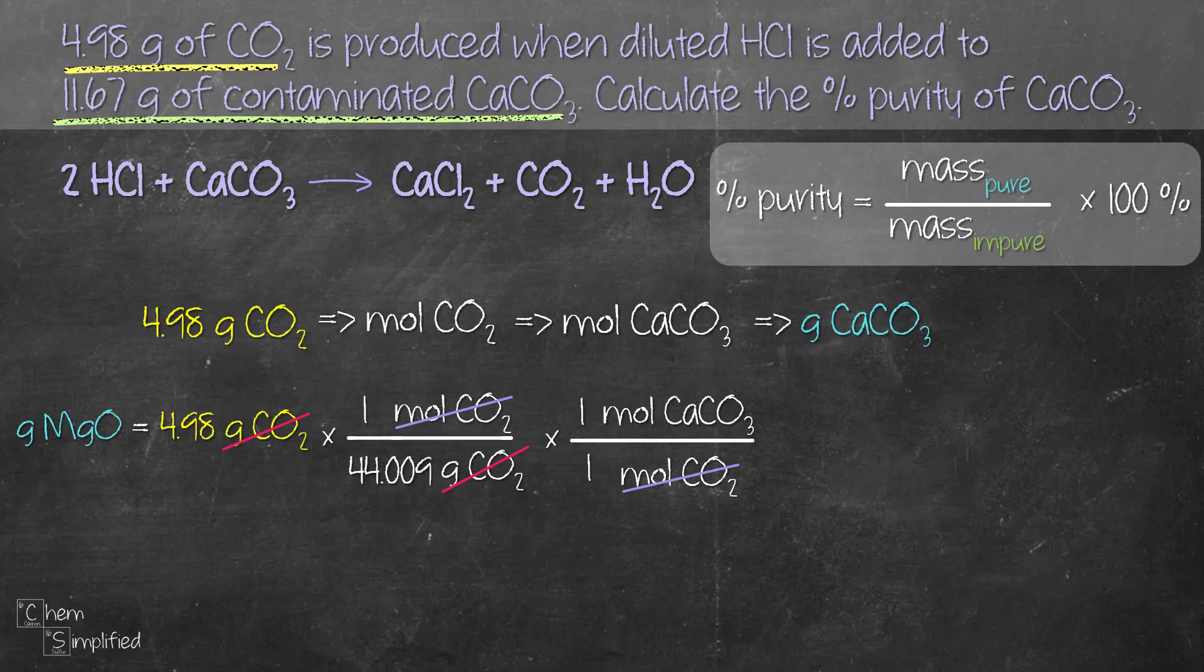So we place moles of CaCO3 at the bottom so they cancel out and then we place grams of CaCO3 which is what we want. Again we refer to the periodic table, we add up the total mass for 1 Ca, 1 C and 3 O and that gives us 100.086 grams for 1 mole.